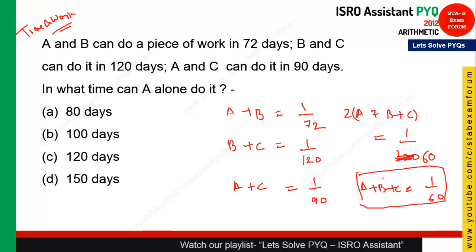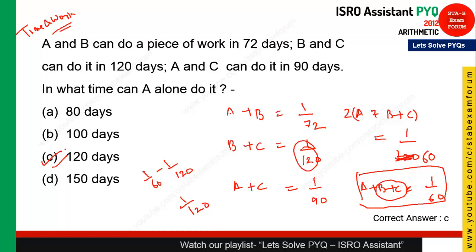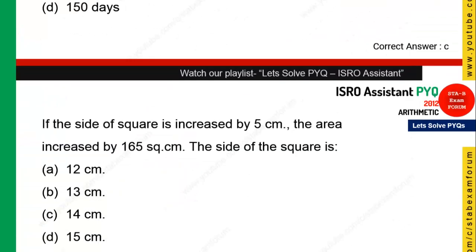To find the time taken by A alone: B + C = 1/120. So A alone = (A + B + C) − (B + C) = 1/60 − 1/120 = 1/120. Therefore A alone takes 120 days. Option C is the right answer.